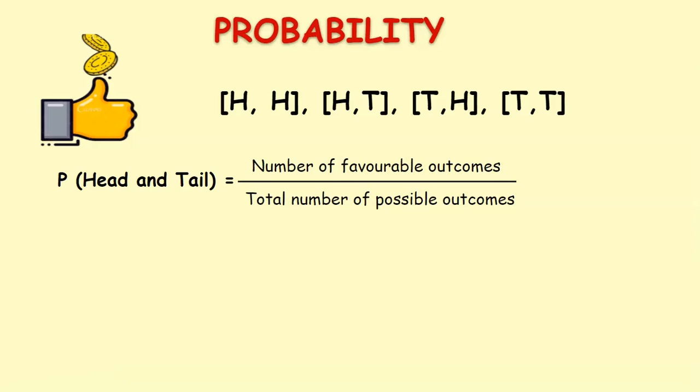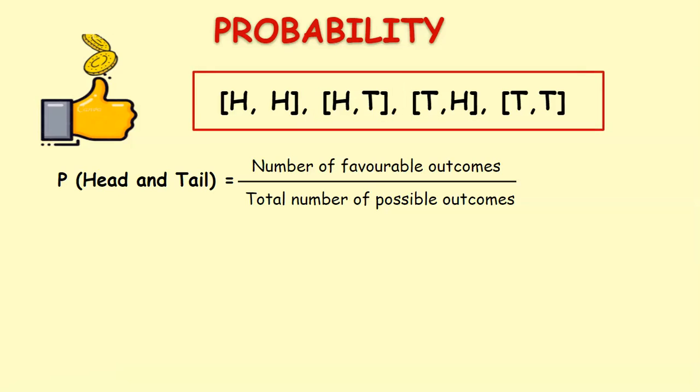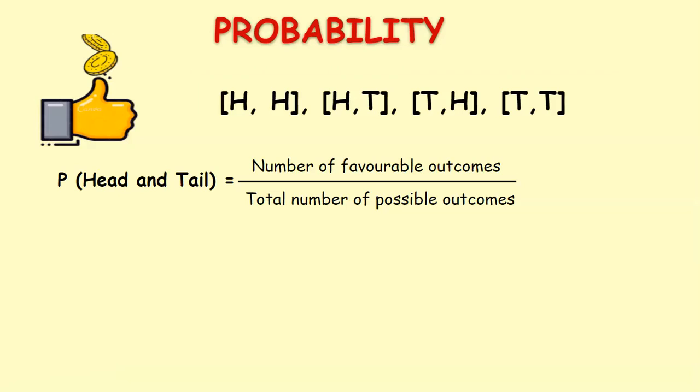Here the number of favorable outcomes are head and tail, and tail and head. So our favorable outcomes are two and the total number of possible outcomes are four. Therefore probability of head and tail would be two by four, which is one by two.